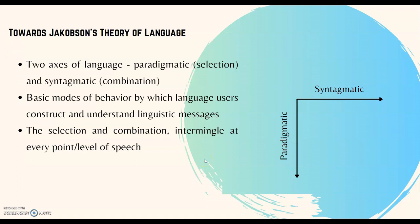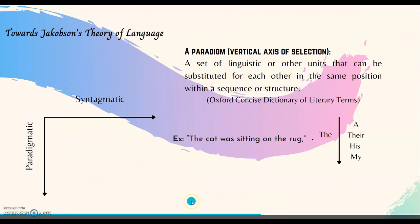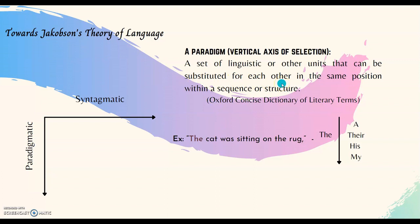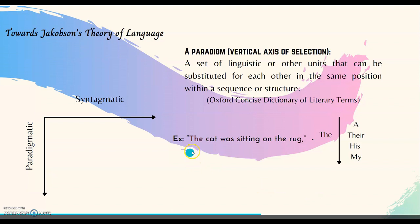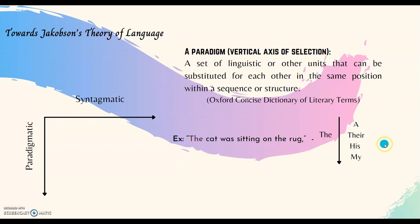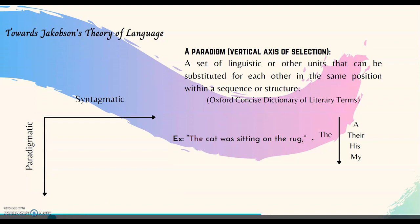This principle of selection and combination intermingles at every point or level of speech. Now, the paradigmatic axis — the vertical axis of selection — is where a set of linguistic units can be substituted for each other in the same position within a sequence or structure, without distorting the syntax. For example, in the statement 'the cat was sitting on the rug,' I could substitute the article 'the' by selecting any linguistic unit from this vertical axis: 'a cat,' 'his cat,' or 'my cat was sitting on the rug.'